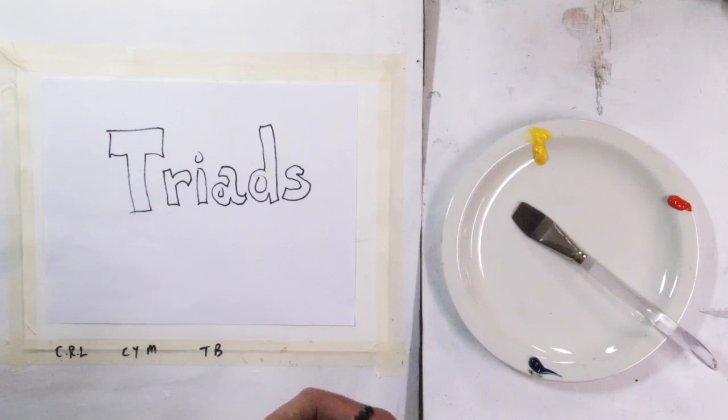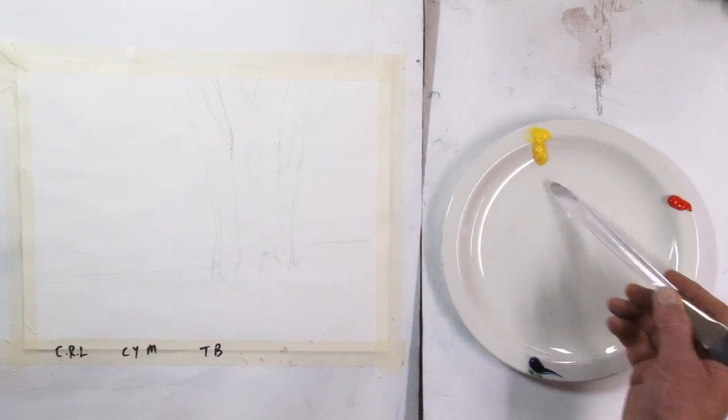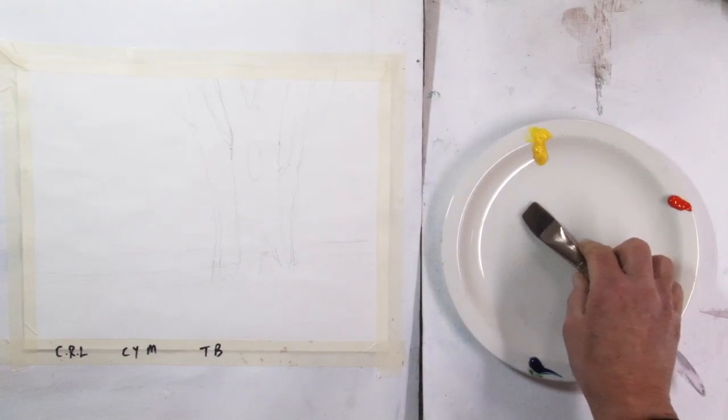We're going to be looking at some wet on wet technique, we're going to be looking at a little bit of brush work, some different ways that you can hold and use the brush, and definitely value is an important part of this painting. The particular colors that I'm using are cad yellow medium, cad red light, and phthalo blue.